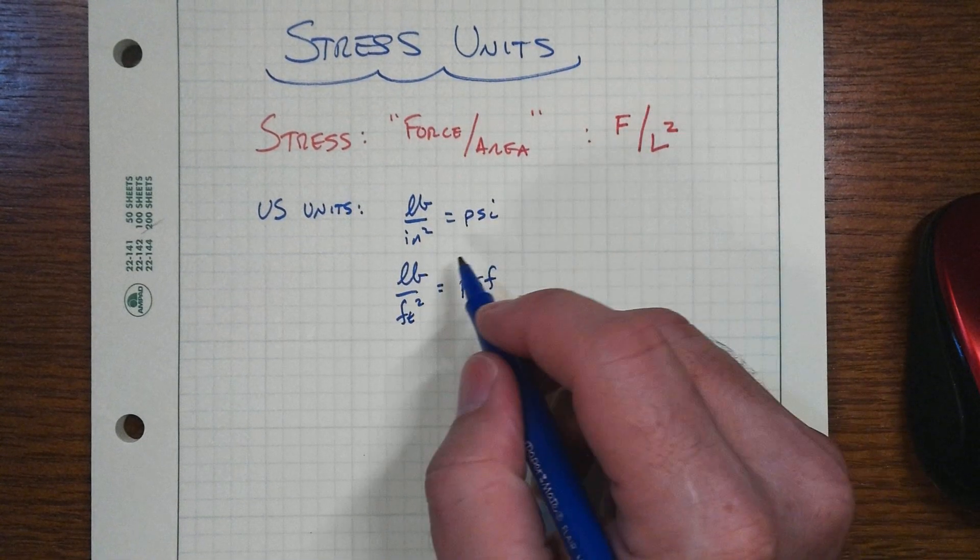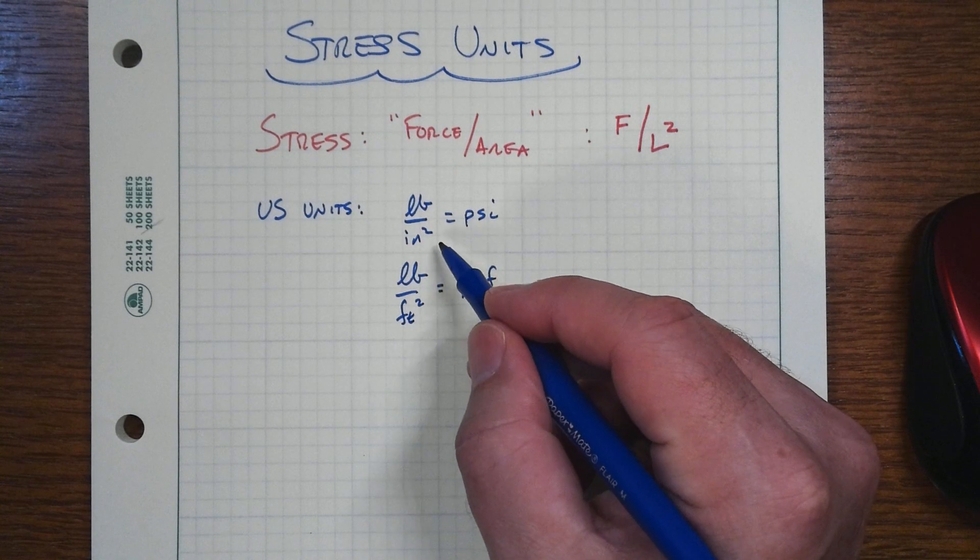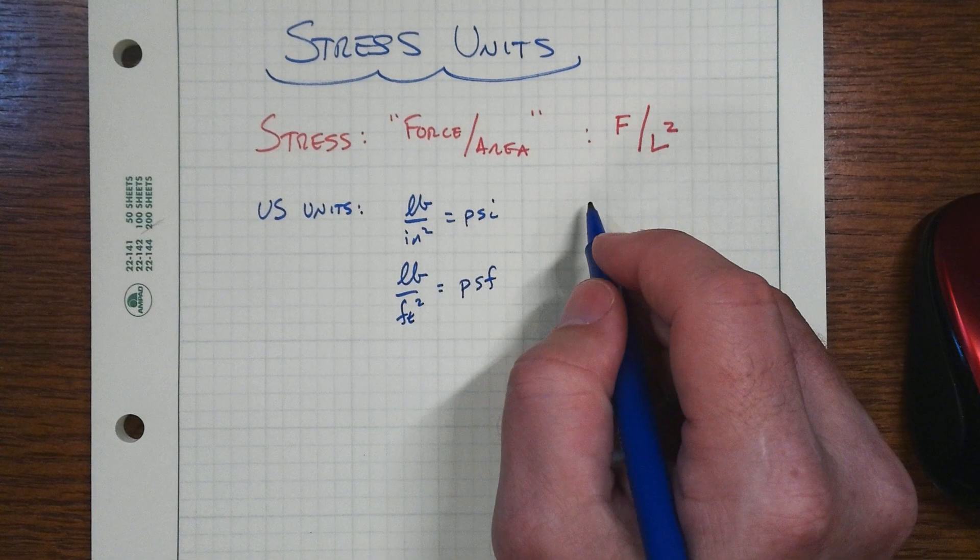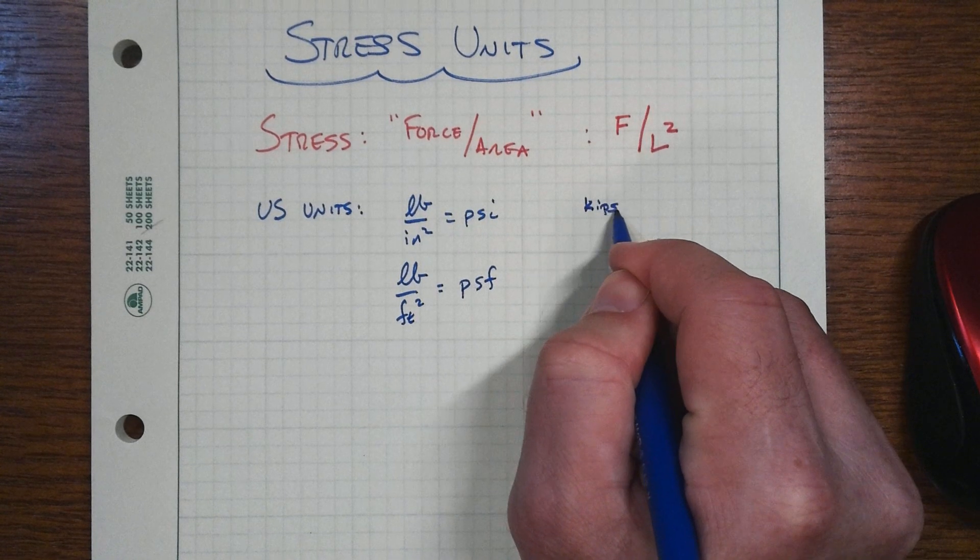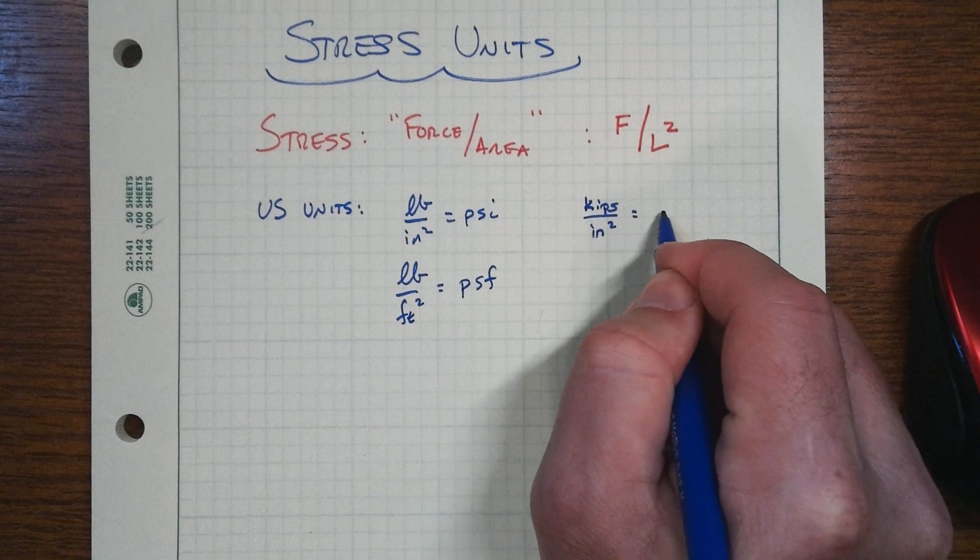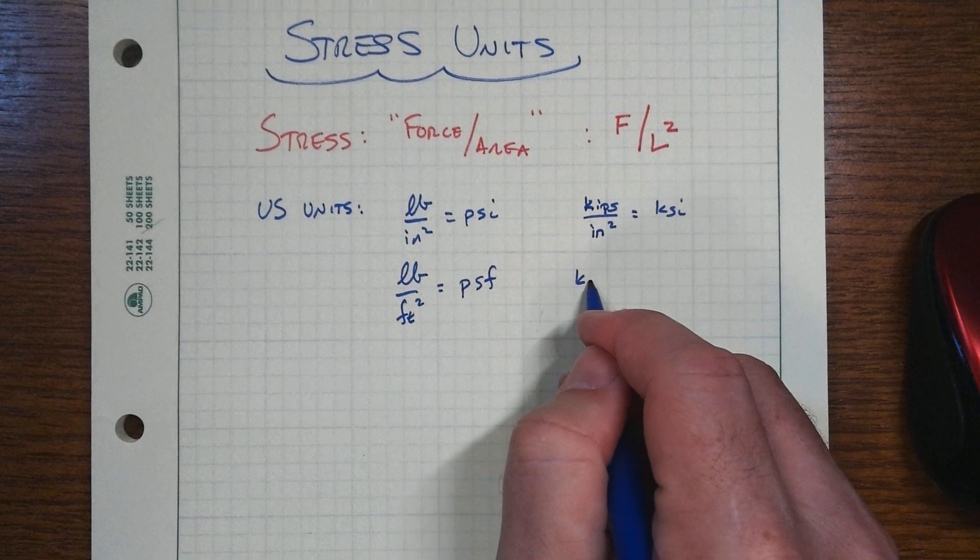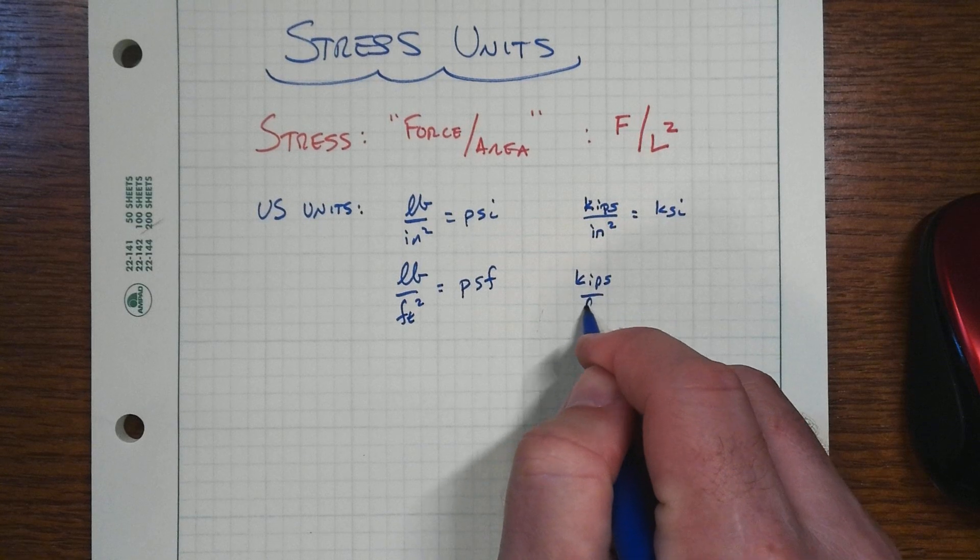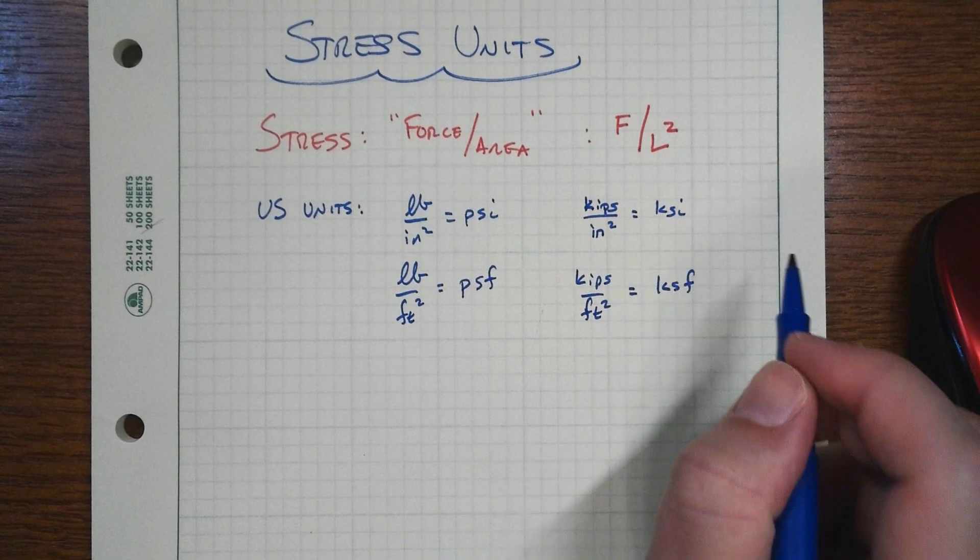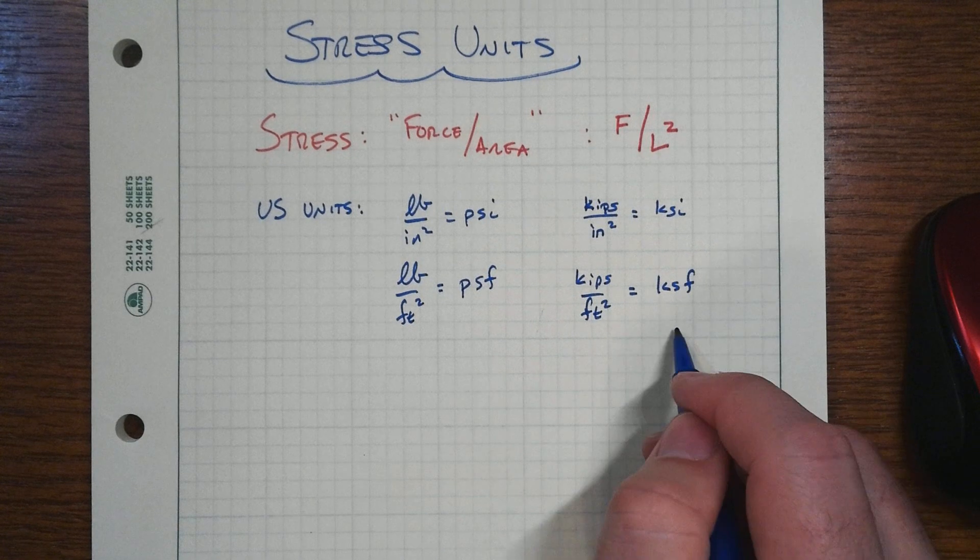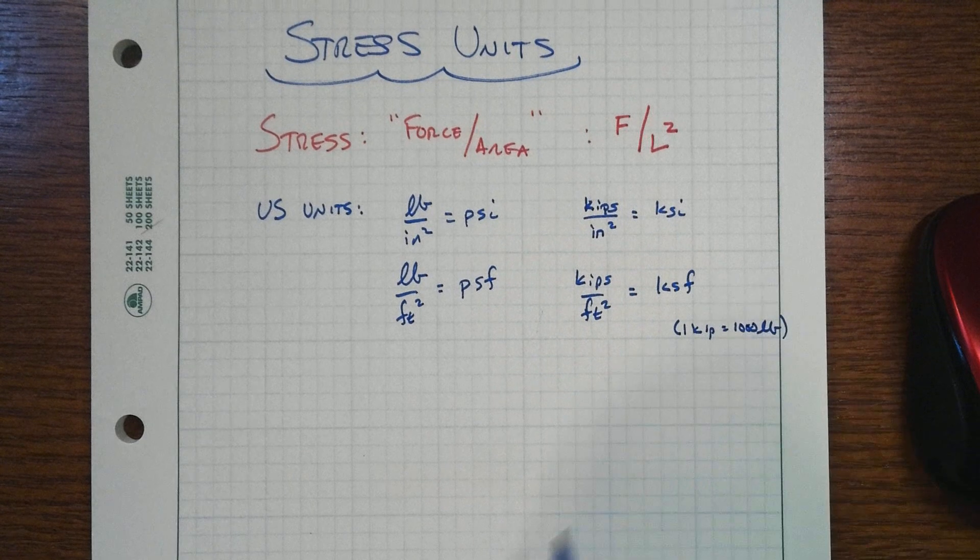And then oftentimes these units are too small, that the magnitudes are much larger than that. So instead, we'll look at kips per square inch, which would be KSI or kips per square foot, KSF.